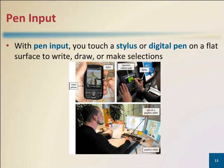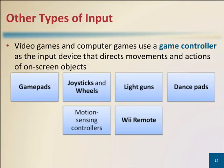A digital pen looks like a ballpoint pen but uses pressure to write text and draw lines. Game controllers are used as input devices for video and computer games.